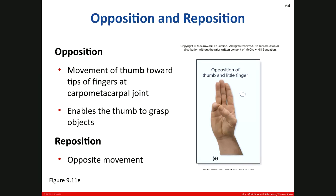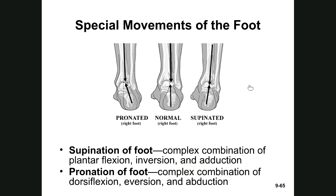Opposition is a specific movement of the thumb toward the tips of the fingers at the carpometacarpal joint, enabling the hand to grasp objects. Reposition is the opposite movement. For the foot, supination is a complex combination of plantar flexion, inversion, and adduction; pronation of the foot is a complex combination of dorsiflexion, eversion, and abduction. Practice these movements to understand them better. Please let me know if you have any questions in this chapter. Thank you.